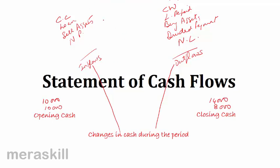We don't mix all these together. Instead, we divide this into three kinds of activities. One is called financing activity, another is investing activity, and net profit or net loss falls under operating activities. So, the cash flow statement is a statement which tells us the reasons for the change in cash balance from the beginning of a period to the end of a period.